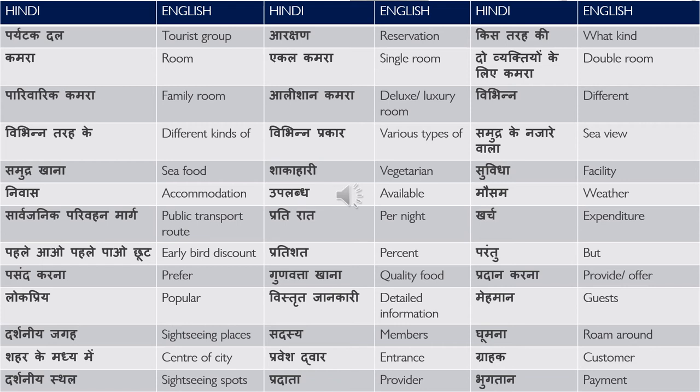ख़र्च — expenditure. पहले आओ पहले पाओ छूट — that is early bird discount. You can also use the English term 'early bird' but translating it will earn you better marks. And if there is a 10% discount mentioned in the dialogue, you are not supposed to say 10 percent — you are supposed to say 10 प्रतिशत. This is a very common mistake and your marks get cut for it. So you must say 10 प्रतिशत, not 10%.